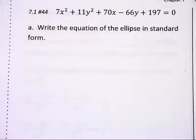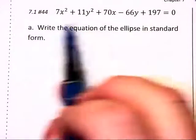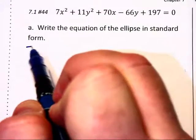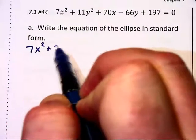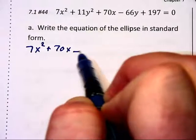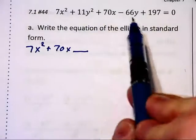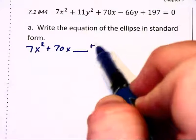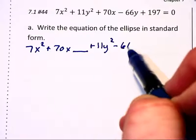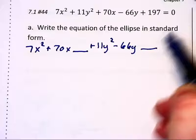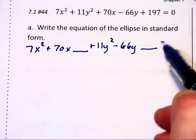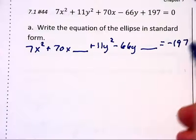This next problem is not in the standard form. So we've got to begin by putting it in standard form. And the first thing we want to do is group the x's together. Write 7x² + 70x and leave a little blank there. And then group the y terms together. Plus 11y² - 66y. Leave a blank. And I'm going to move the 197 to the right and make it a negative 197.